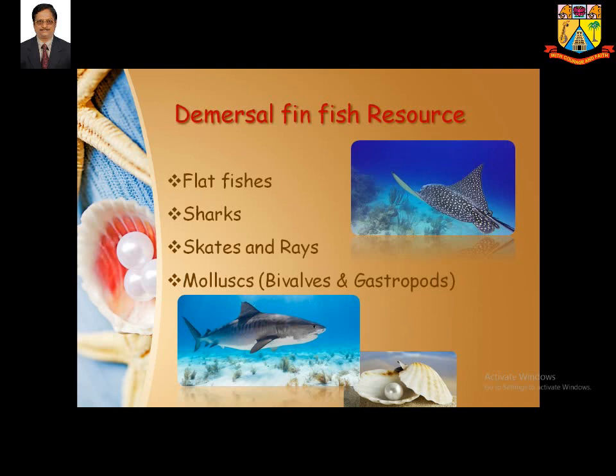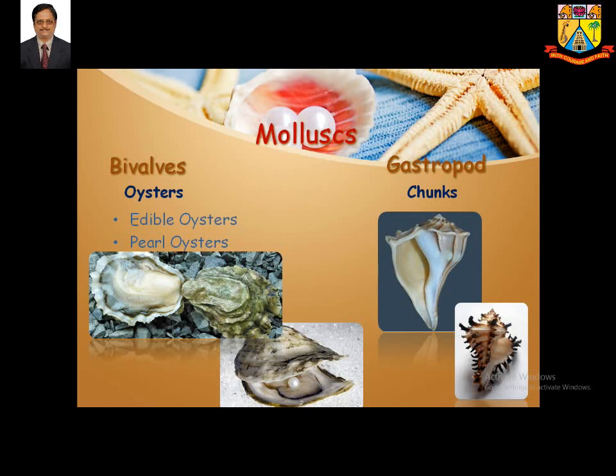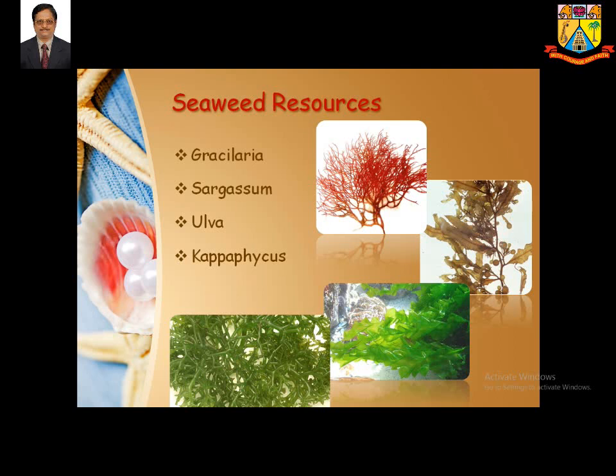Among gastropods, the conch Xancus pyrum is used in a holy manner in temples all across India. Coming to seaweed resources, species like Gracilaria are used to produce Agar-Agar, which is very essential for microbiology and biotechnology work. These lesser-known seaweeds can be exploited from both coasts of our country.